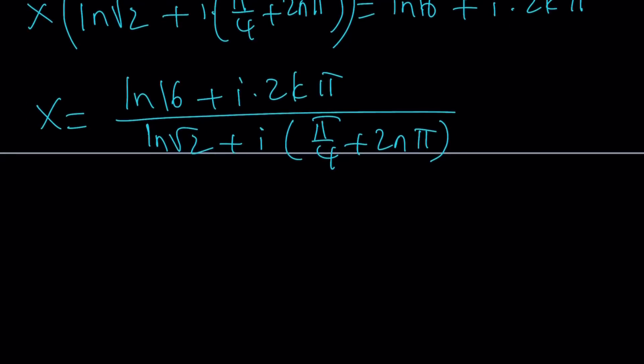But I'm going to simplify a little bit because I want to show you something cool. I'm going to write this as ln 2^4 or 4 ln 2. And then ln√2 can be written as 1/2 ln 2 because 2 to the power of 1/2 is that.